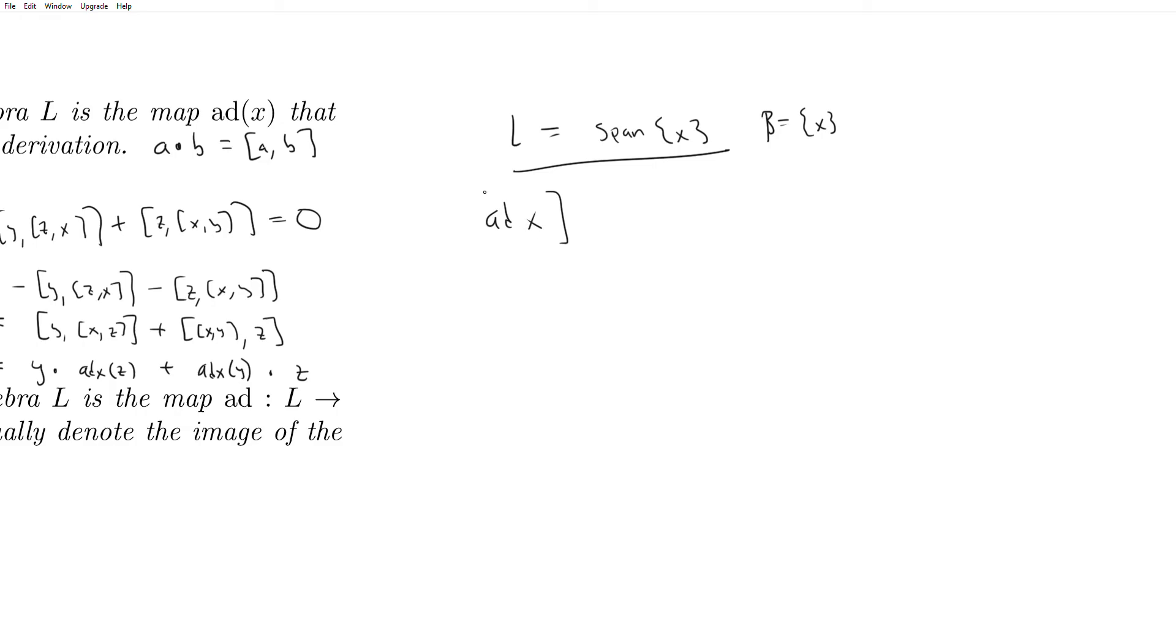And so ad(X) is certainly a linear operator, so it can be represented as a matrix. And in the beta basis is going to equal just the action of ad(X) on your basis vector. Well, of course, ad(X) acting on X is just X bracket X is 0. So it's just 0.